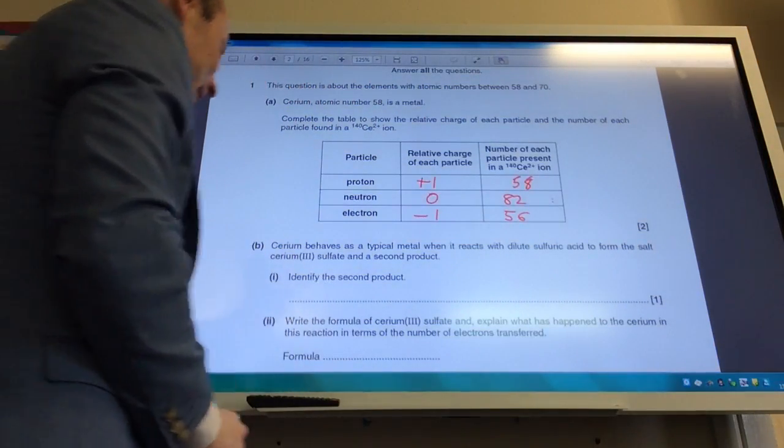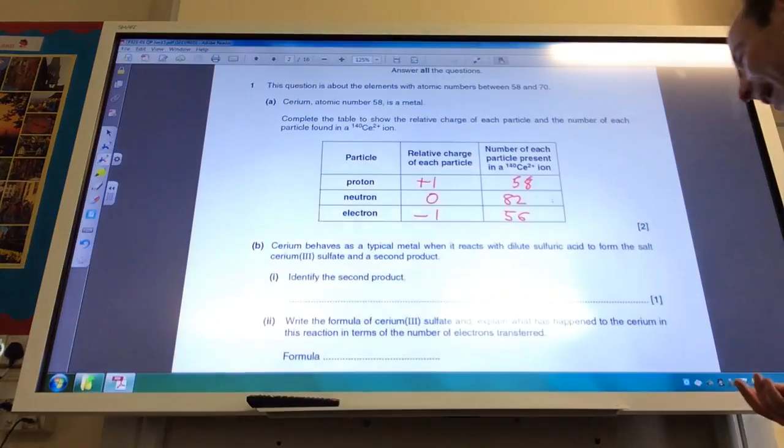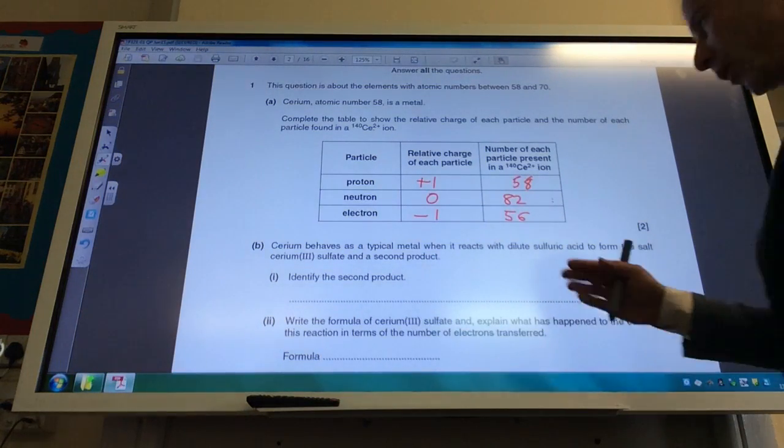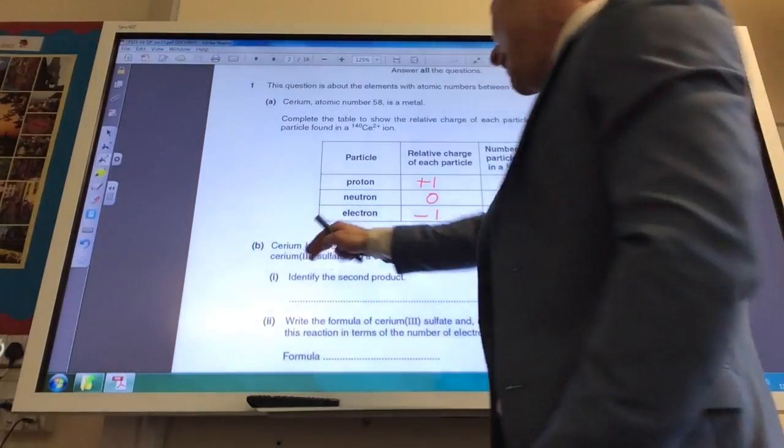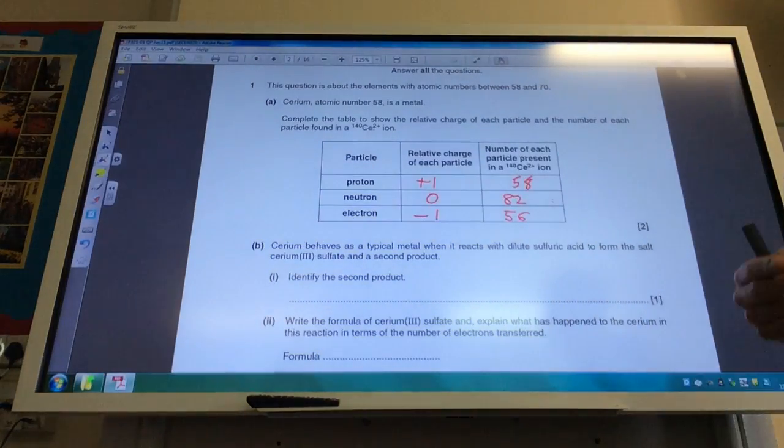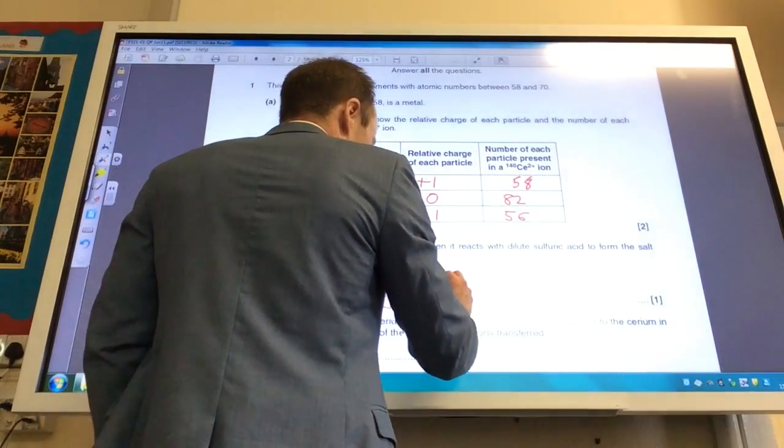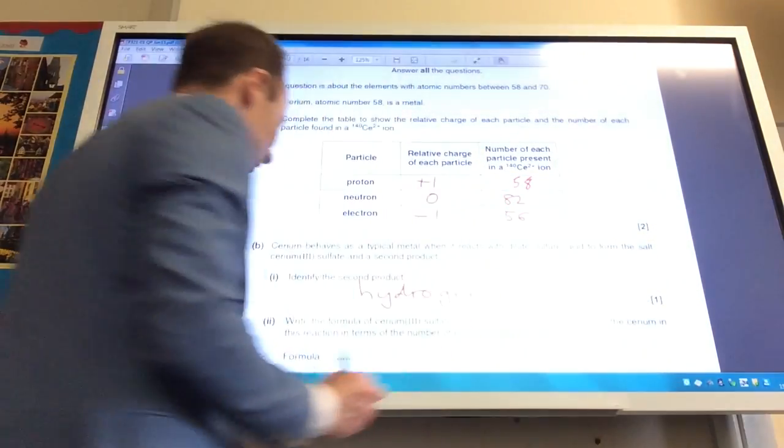Cerium behaves as a typical metal with diluted sulfuric acid to form cerium 3 sulfate. What's the second product? Well, it's metal plus acid gives me a salt plus hydrogen, of course. Your second product is going to be hydrogen.